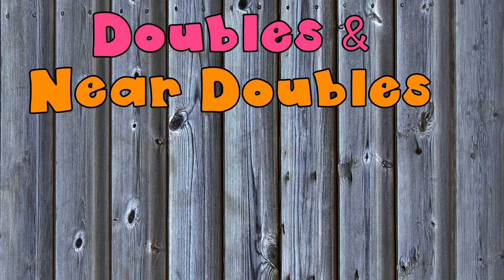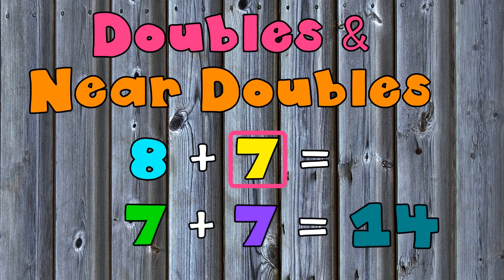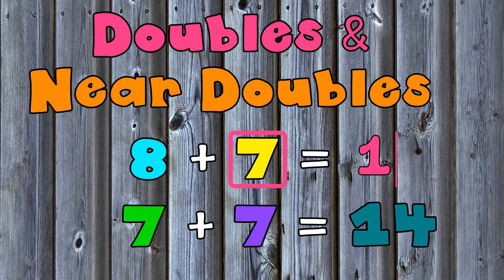We learned that to add near doubles fluently, we could use its doubles fact. We can do that by looking at an addition problem and determining which is the smallest addend and adding it or doubling it. Then we add one more to our sum to give us the answer for our addition problem.